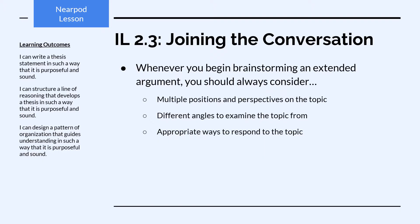Whenever you sit down to write an extended argument, the first thing you'll probably do is brainstorm ideas. In that brainstorming process, it's important that you always do these three things: consider the multiple positions and perspectives on that topic, consider different angles to examine the topic from, and always consider the most appropriate ways of responding to the topic.